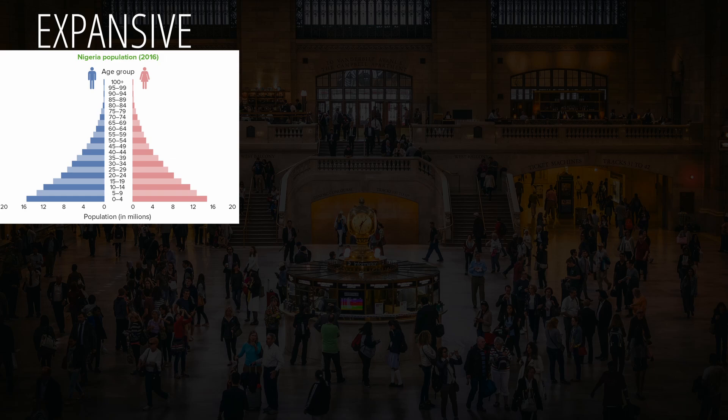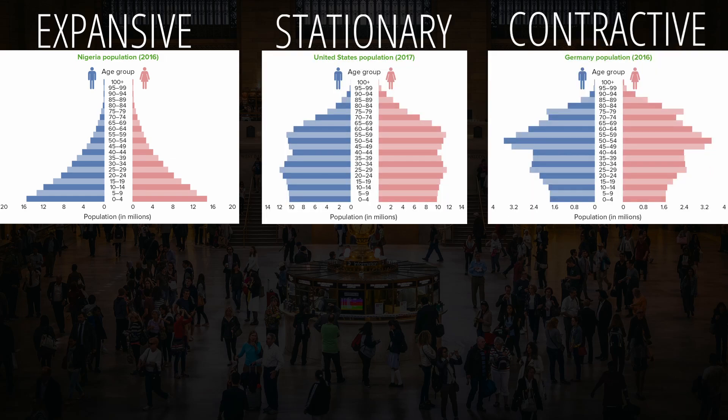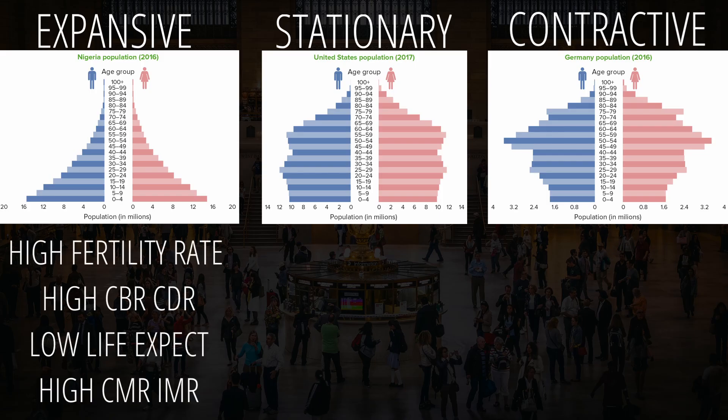With population pyramids, there are three basic forms: expansive, stationary, and constrictive. Expansive population pyramids look like a cone, meaning there's quite a bit of children being born — thus a high fertility rate and CBR. However, as the children get older, the bars progressively get smaller, which means a significant number of children are dying, thus a high CDR. This can be due to a lack of healthcare, famine, or diseases, and will lead to low life expectancy and extremely high CMRs and IMRs.